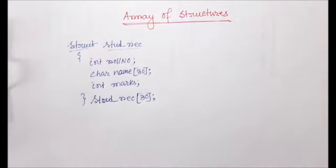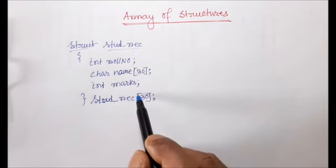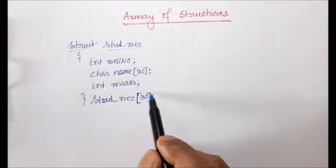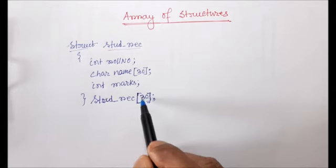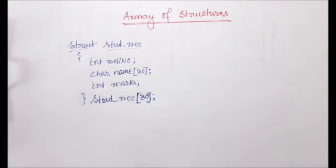At the end, we have done something different. We give the name of the structure followed by an array symbol with square brackets, and within the brackets we have written 30. What does this mean? It means a class of 30 students, so the number of records in this case is 30.